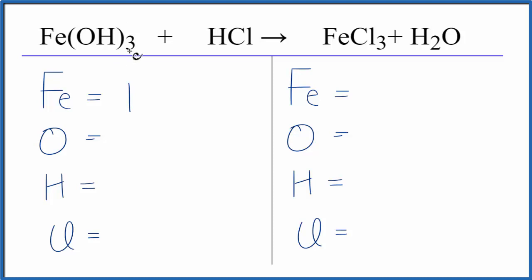One iron atom, and this three applies to everything in parentheses, so three times one, three oxygens, three times the one hydrogen, three hydrogens, but do not forget this one. So we have four hydrogens, and then we have just the one chlorine.